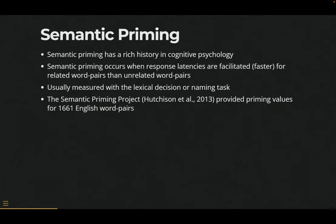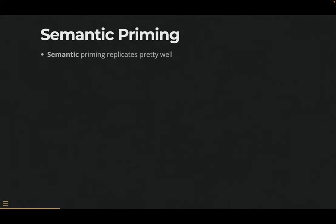The Semantic Priming Project was a big inspiration for this. It provided priming values for a ton of English word pairs in first order and other order associates. I distinctly remember talking to Keith about this many years later, and he said if he was to do it again, he wouldn't use SOA. So we didn't. I feel like this project is an extension and a good replication — we're adding to the data we already have. Semantic priming in general replicates pretty well as we talk through the replication crisis.